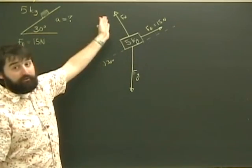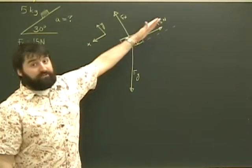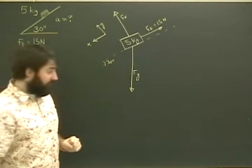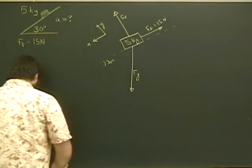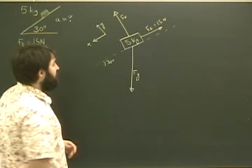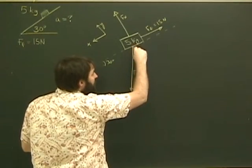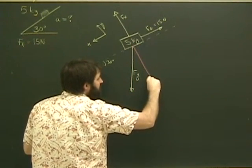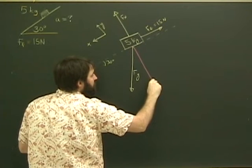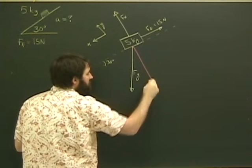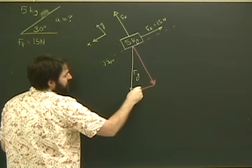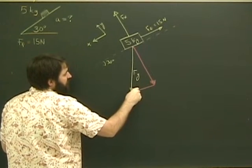The normal force is already in the y direction. The force of friction is already in the negative x direction. So the only one I've got to break up is the force of gravity. So I'm going to break it into two components. The y component in this direction, and the x component in this direction.